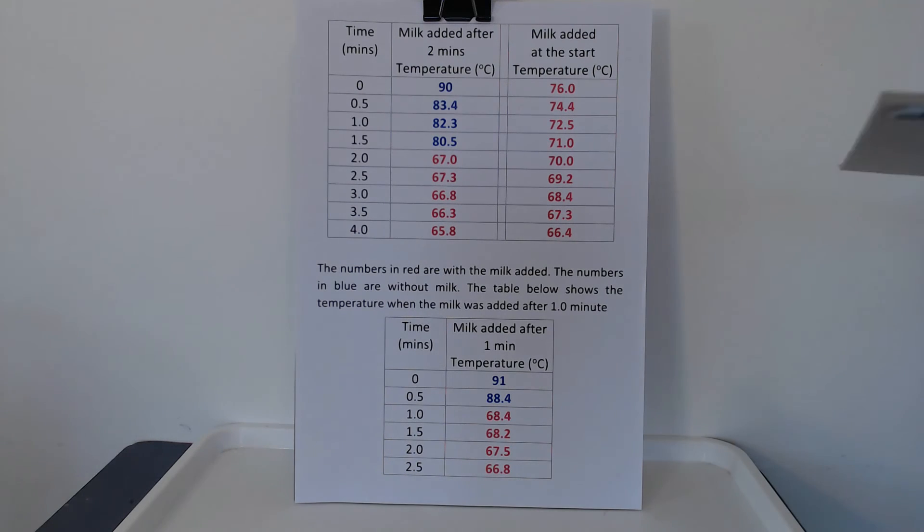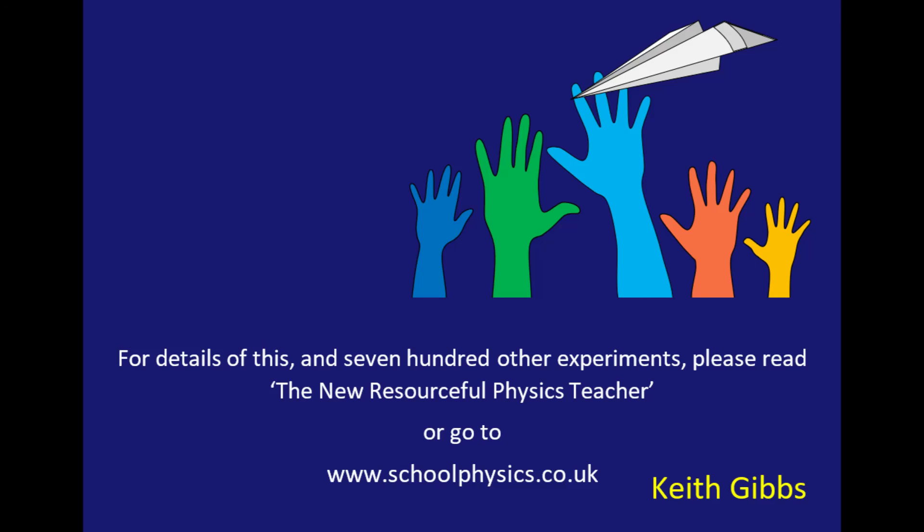Well, what does it prove? Well, it's hardly conclusive. But it seems as long as you add the milk after a minute or so, the temperature does indeed drop to our required 68 more rapidly than if you add the milk at the very start. But what if we'd chosen a different drinking temperature? And do your results that you took support this conclusion? I think the only thing to do is for you to repeat the experiment and let me know if you're sure one way or the other. Thank you.